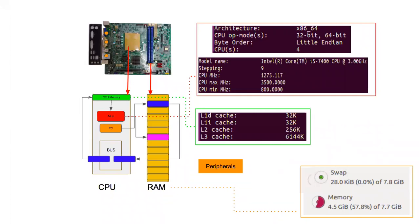So your program always accesses data from the CPU memory, and data is brought from outside and placed there for the ALU. Is this operation — how the CPU and RAM operate together — clear, guys? These parameters are here on the right if you see.